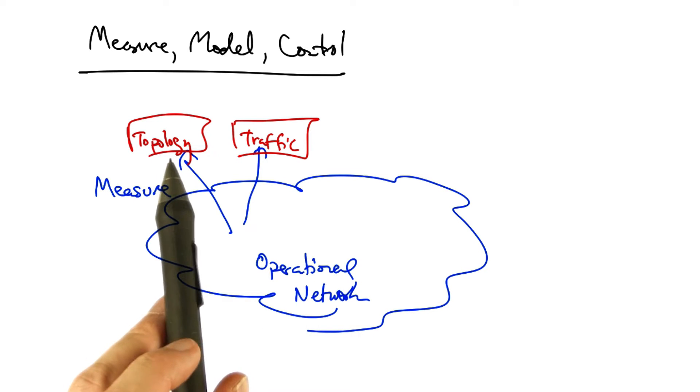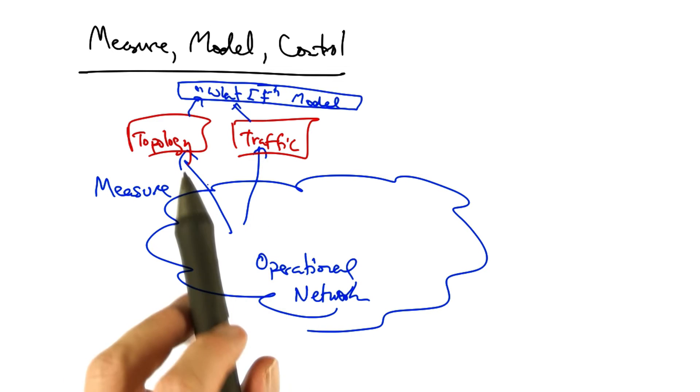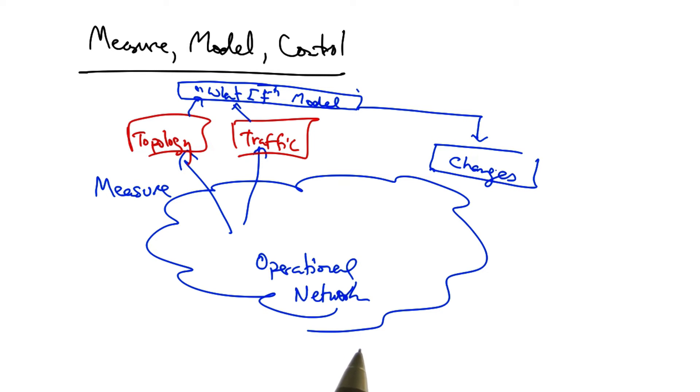An operator might measure the topology and traffic, feed the topology and traffic to a what-if model that predicts what will happen under various types of configuration changes, decide which changes to effect on the network, and then ultimately control the network behavior by readjusting link weights.